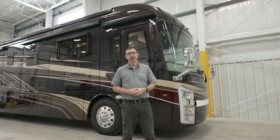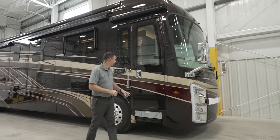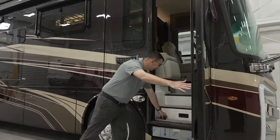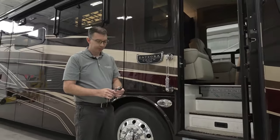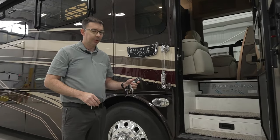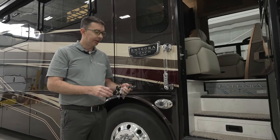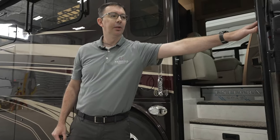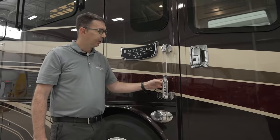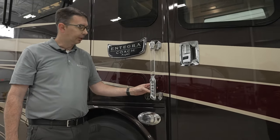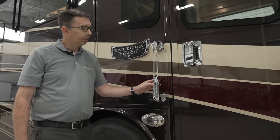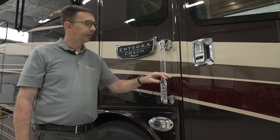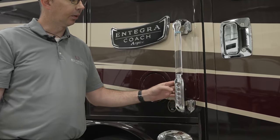We'll start at the front door and at our keyless entry system. Before you start working on the keyless entry, it's important that you always have an extra set of keys outside. Keep that key fob with you along with the keys. I'm going to close the door and we're going to talk about the keyless entry system. To lock the doors, press and hold the one button — that locks the entry door and disables the cargo doors.